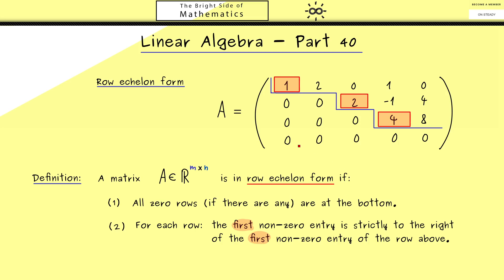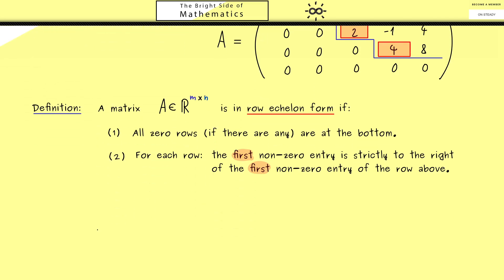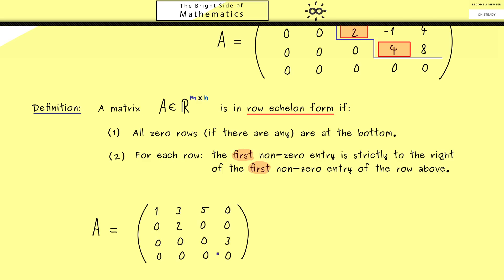Let's look at another example with a 4×4 matrix, showing that the row echelon form also applies to square matrices — it's a very general concept. We check if we have the row echelon form by starting at the top and going to the bottom row by row, and from left to right.